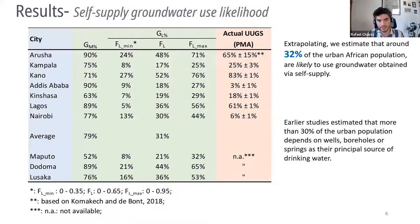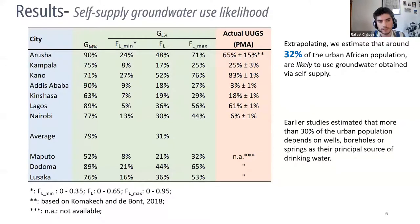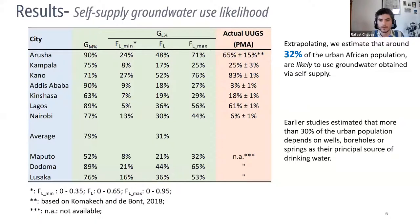The 10 cities we took into account were Arusha, Kampala, Kano, Addis Ababa, Kinshasa, Lagos, Nairobi, Maputo, Dodoma, and Lusaka, as they had available data and were big cities. From these results, we obtained that about 32% of the urban African population are likely to use groundwater obtained by self-supply. Earlier studies from 2011 estimated 30% or more of urban population depends on wells, boreholes, or springs as their primary drinking water source — also considering South Asia — so our results resemble this previous estimation.